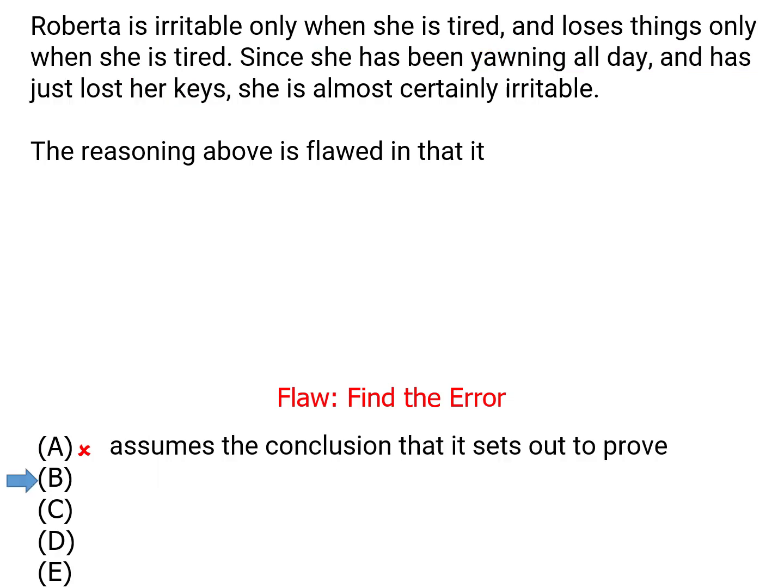Answer choice B says the argument assumes the conclusion that it sets out to prove. This would be a circular argument, which occurs only when the evidence and conclusion in an argument are identical — and they aren't here.